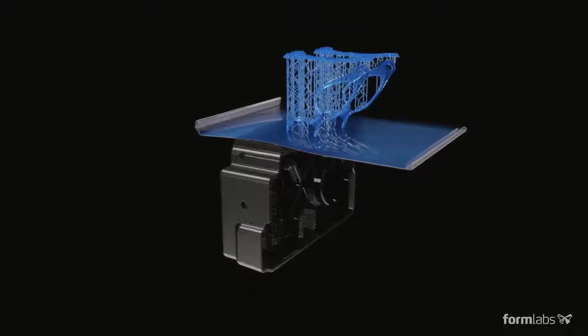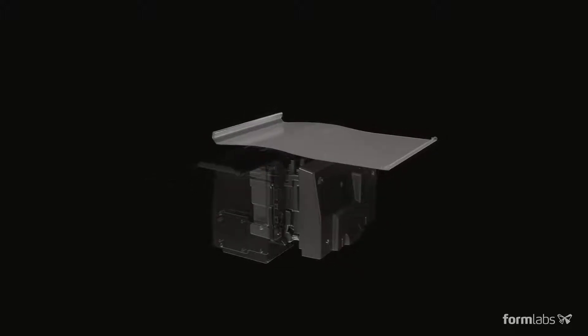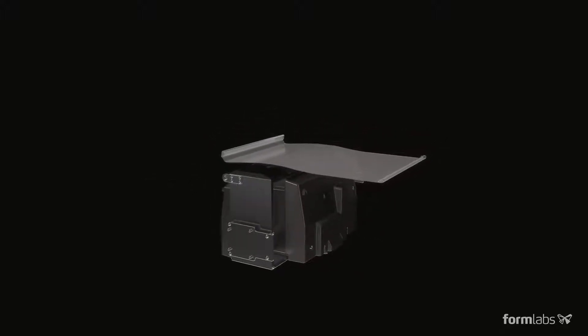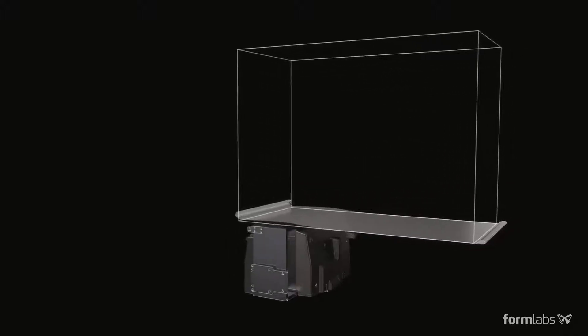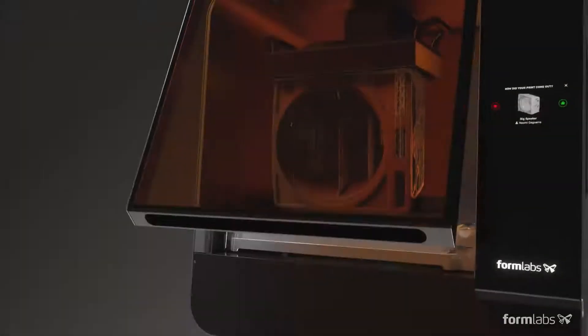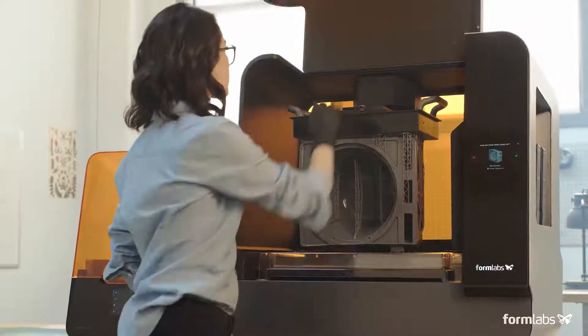Another advantage of LFS is that it works at scale. The Form 3L uses two staggered LPUs to offer five times the print volume. With twice the laser power, now you can print large parts fast.